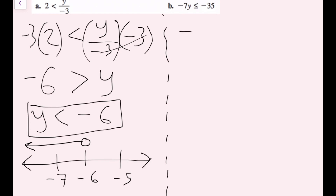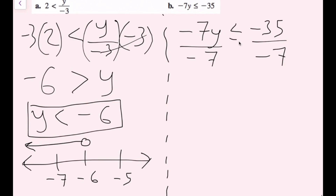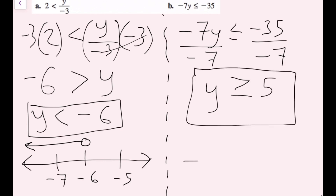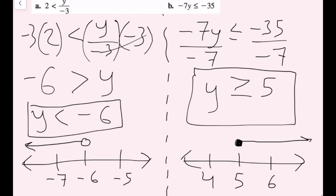For part B, I'm going to rewrite: negative 7y is less than or equal to negative 35. I see that I'm multiplying y by negative 7, so to cancel out multiplication I'm going to divide both sides by negative 7. But anytime I divide by a negative number, I need to flip this inequality symbol. So less than or equal to becomes greater than or equal to. The negative 7s cancel, leaving y, and negative 35 divided by negative 7 is positive 5. On the number line with 4, 5, and 6, I draw a closed circle and the arrow goes to the right.